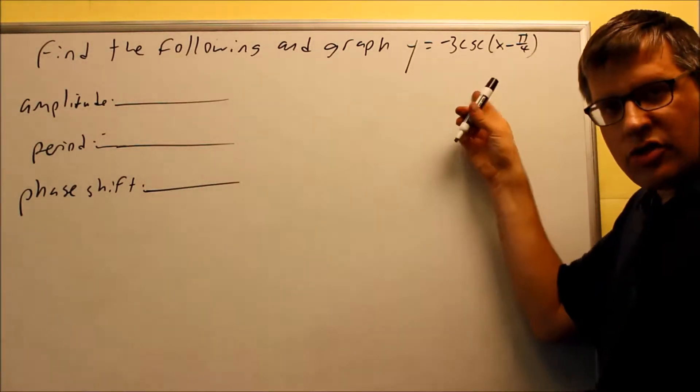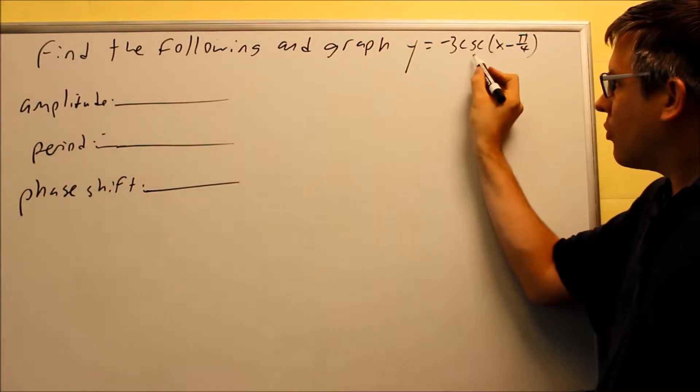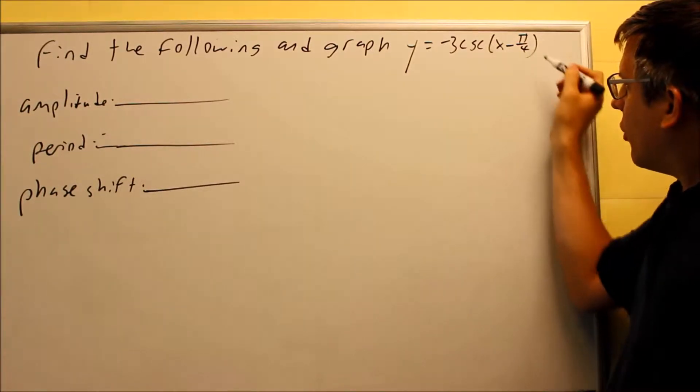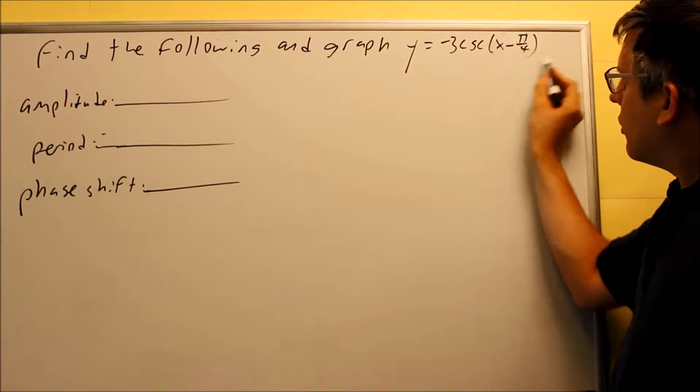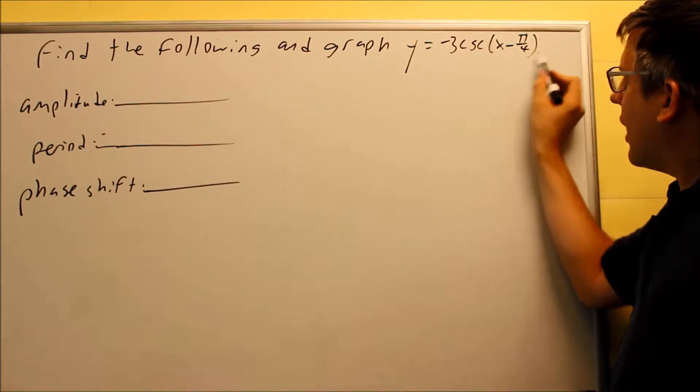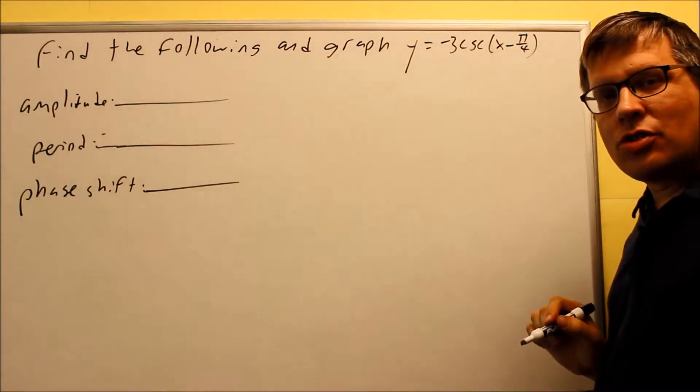This one, we have a cosecant this time, negative 3 cosecant x minus pi over 4. So inside here, since we have something that comes after the x, that's actually going to be a phase shift.